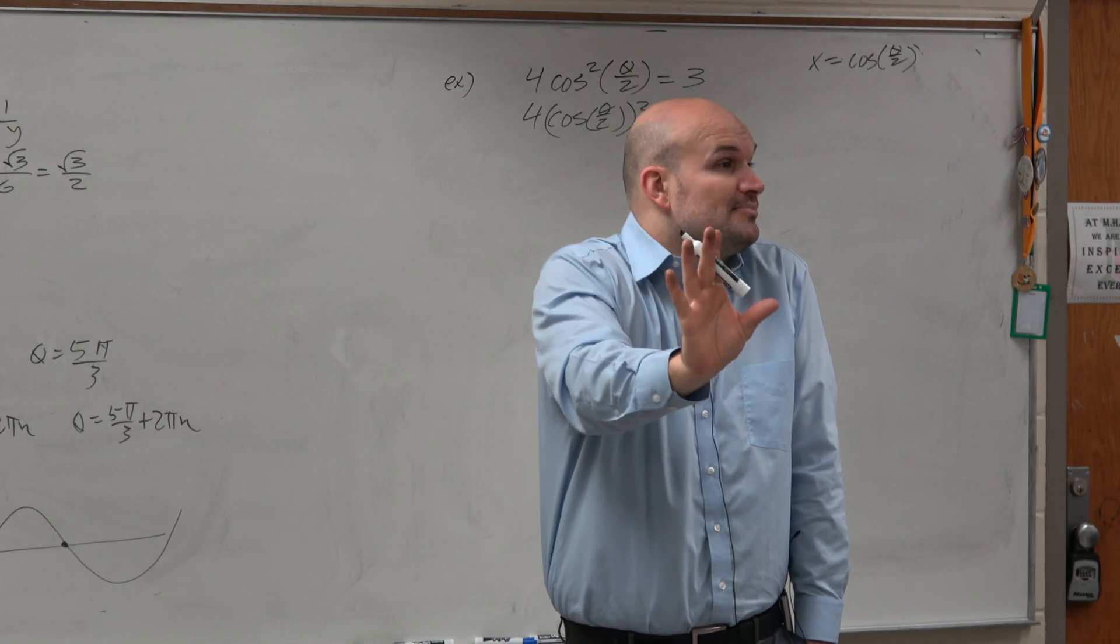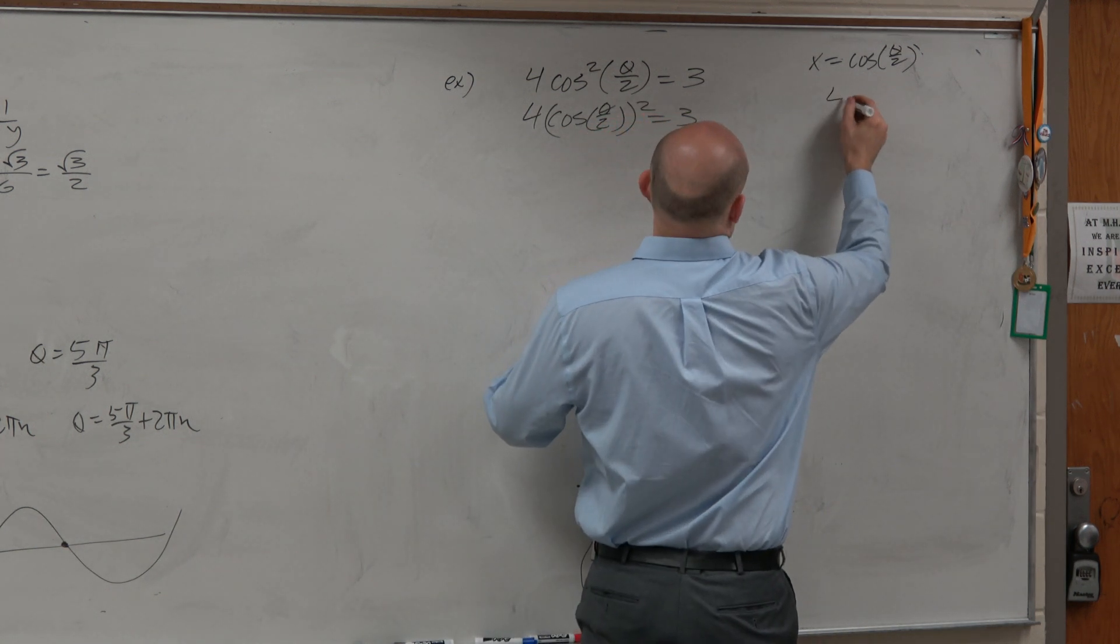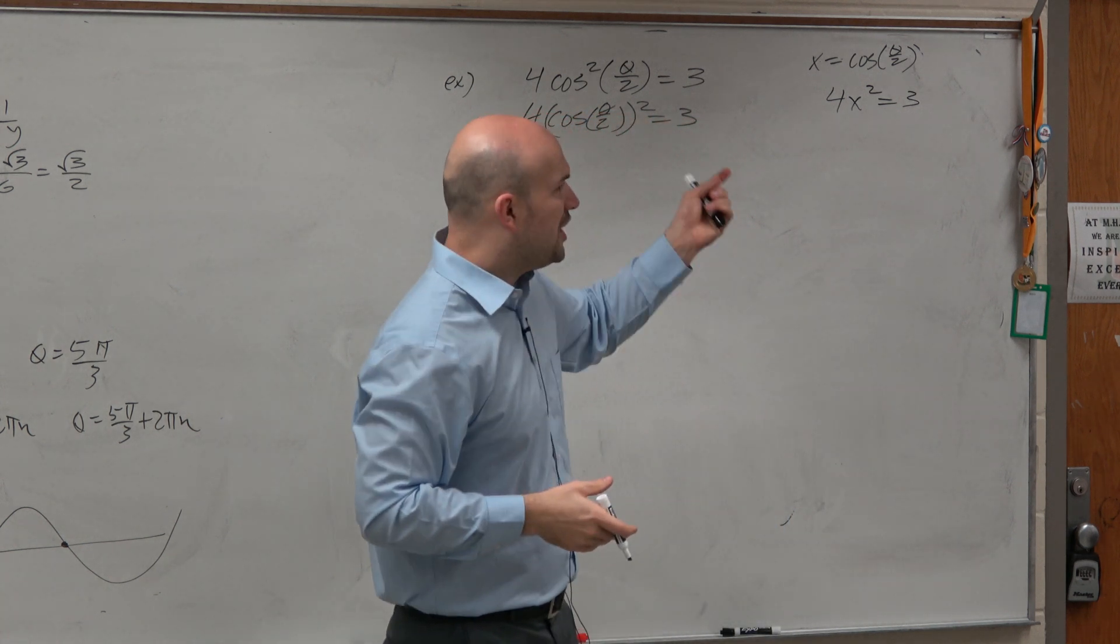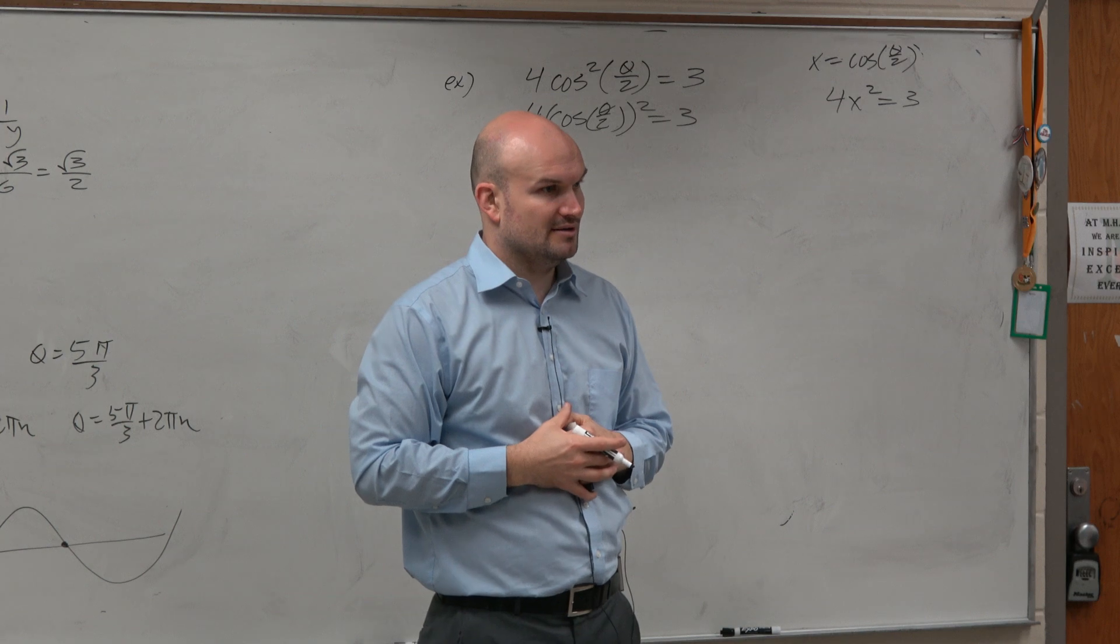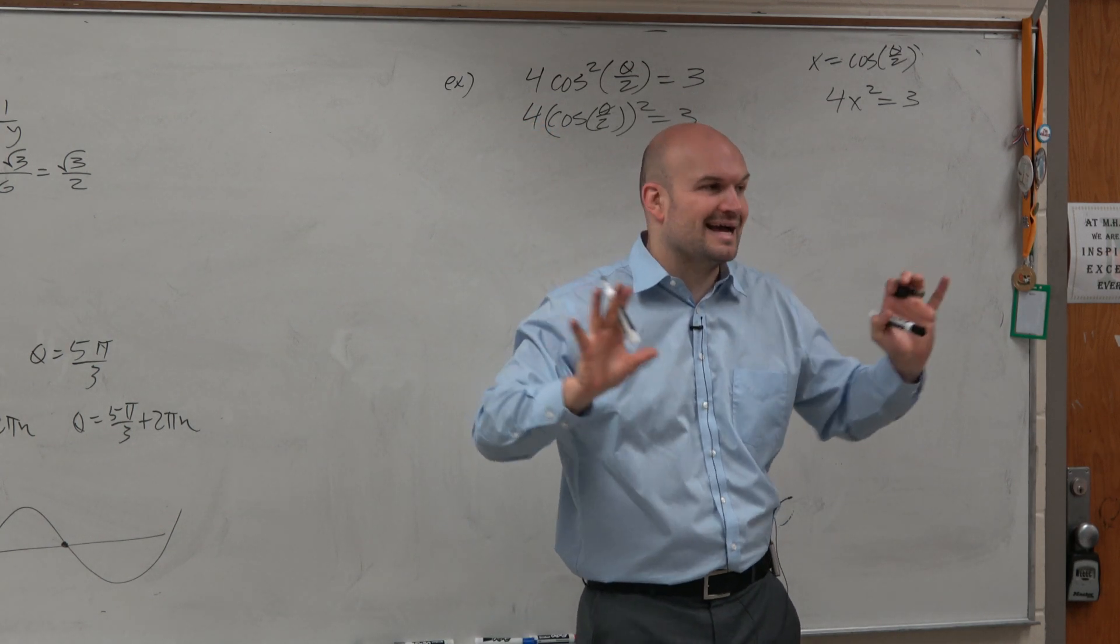So by doing that, I get 4x squared equals 3. And I say, oh yeah, I definitely did that in Algebra 1. I can solve that fairly easily, right? When I get rid of the trig and just focus on the algebra, I can be like, I can solve this.